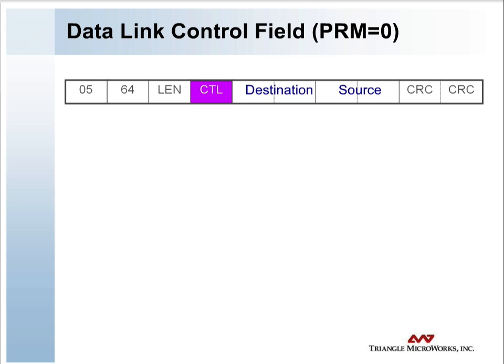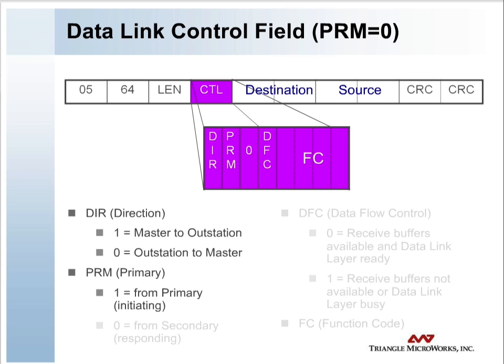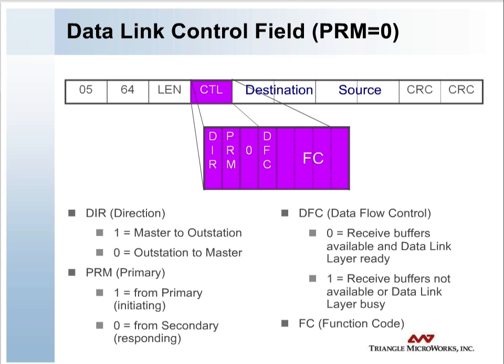The data link control byte indicates the purpose of the data link frame and the status of the logical link. Possible data link control byte values include ACK, NACK, link needs reset, link is reset, request data link confirm of the frame, request link status, and link status reply.